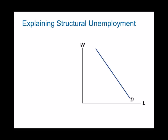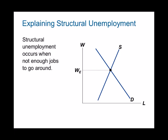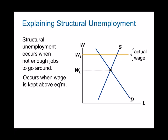Structural unemployment occurs when wages are kept above equilibrium. Even though the equilibrium wage is WE, for some reason the wage is kept at W1 — above equilibrium. This means more workers are willing to work than there is demand for, resulting in unemployment. There are three reasons this happens: minimum wage, unions, and efficiency wages.